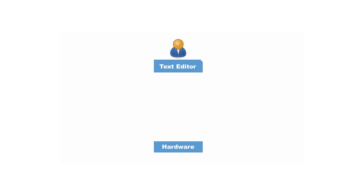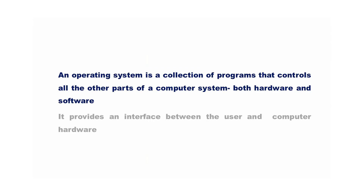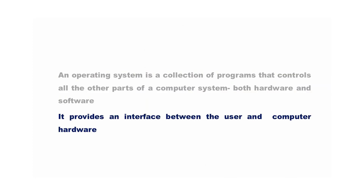In order to simplify the process, the actions that are common to all the programs can be bundled together so that it provides a platform over the hardware on which other programs can work, and that software is known as an operating system. An operating system is a collection of programs that controls all the other parts of a computer system, both hardware and software. It provides an interface between the user and the computer hardware.